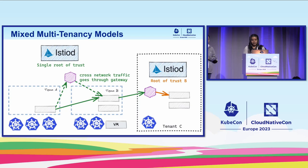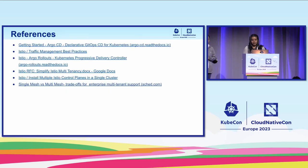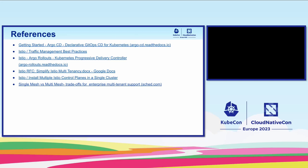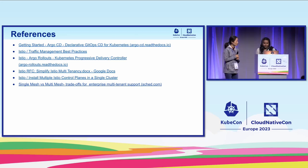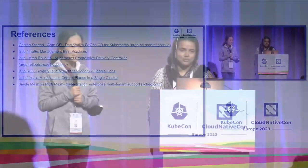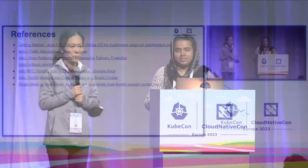One last thing we want to highlight: you can actually run a mixed multi-tenancy model. It really depends on your requirements, particularly regarding isolation and trust requirements for your organization. If a single root of trust works well, you could potentially run that on some of your clusters and then also run a different root of trust as Fasila showed in a separate cluster. With that, I think we are pretty much running out of time. We may have time for one question. All the references will show everything that was done during the demo. This is also already documented in the Istio documentation — please feel free to explore that documentation to understand it better.